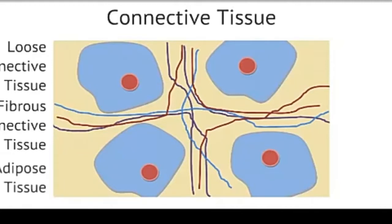Adipose tissue, also called fat tissue. The size of these cells may change depending on the amount of lipids stored within them. The adipose tissue functions as an energy stockpile for the body, as well as padding and thermally insulating it.